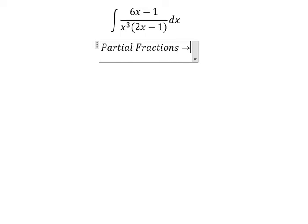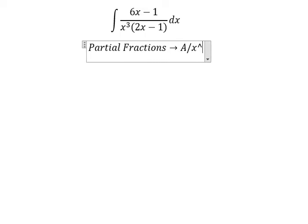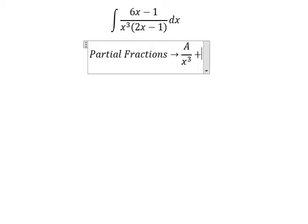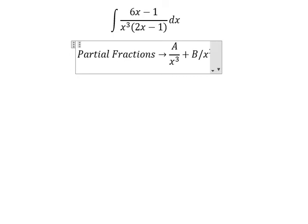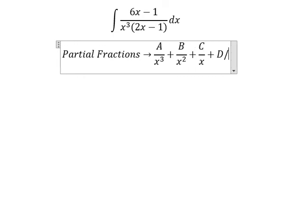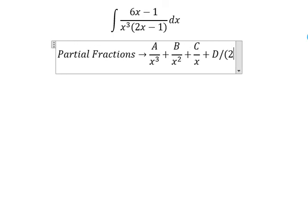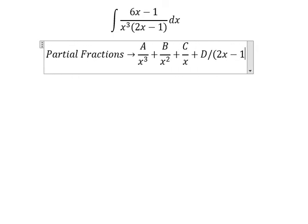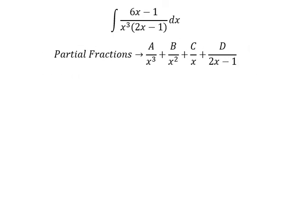I will put A over s to the power of three, B over s squared, C over s, and D over 2s minus one. Now we do common denominator.